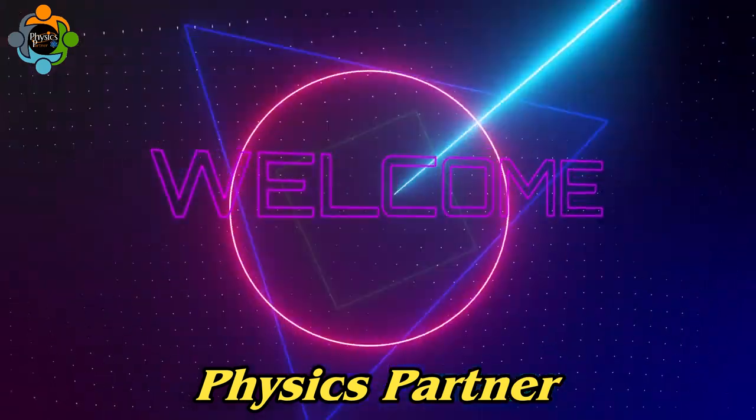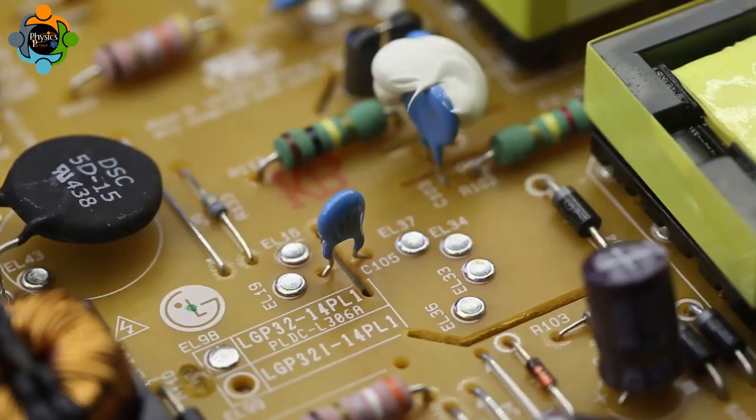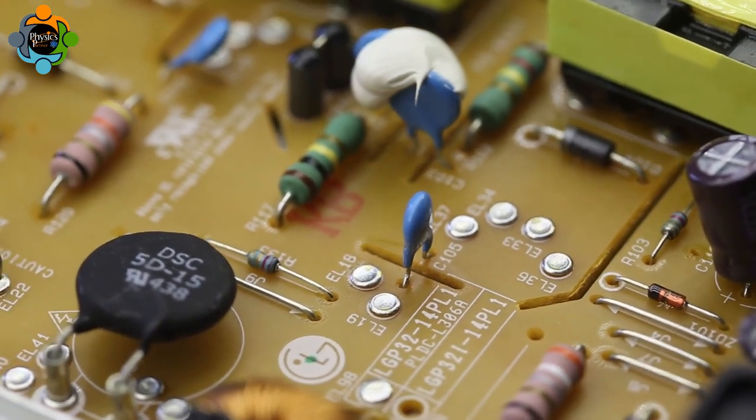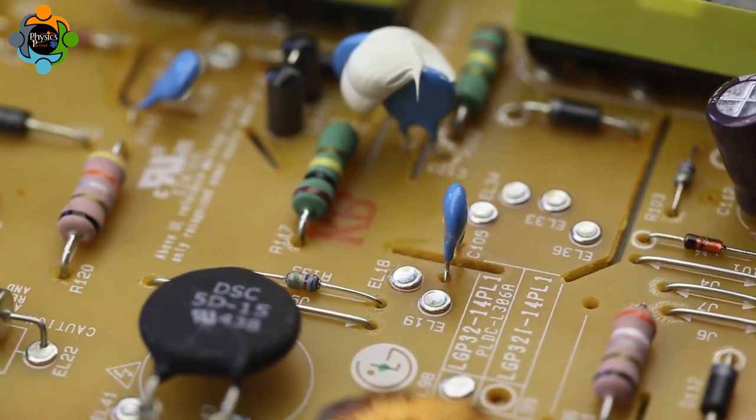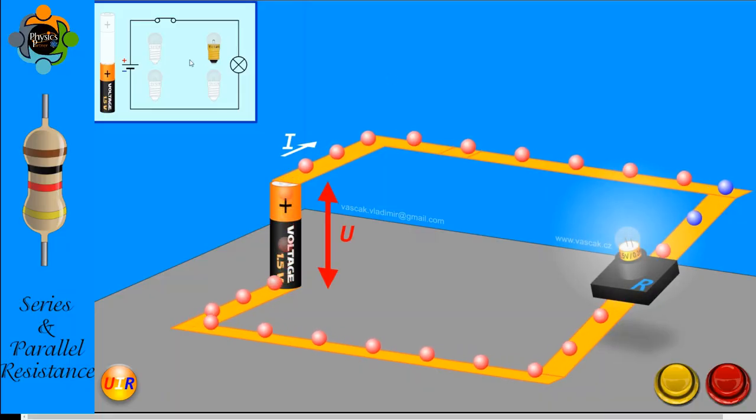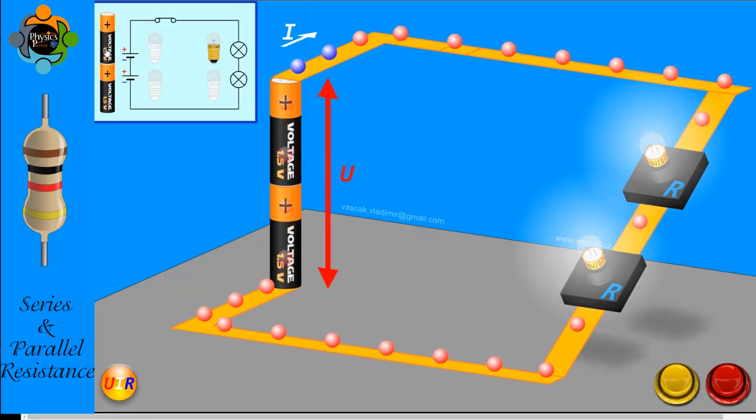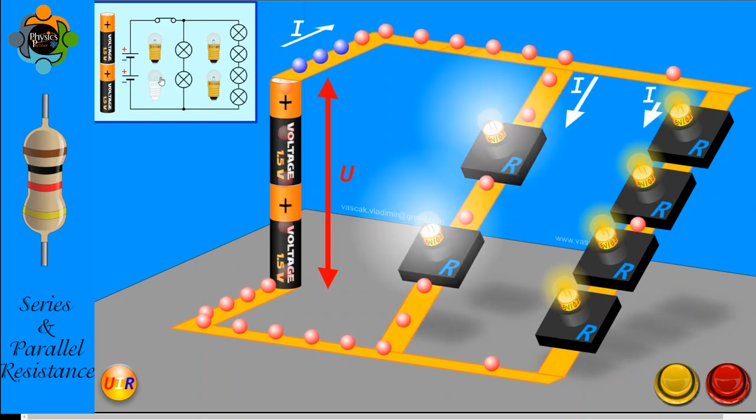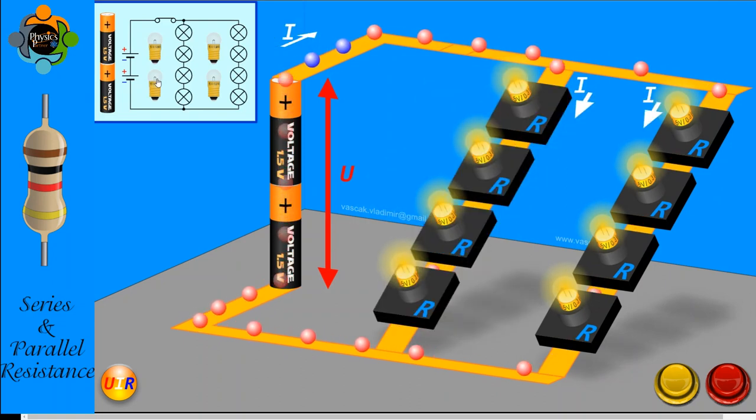Hello and welcome back to another episode of Physics Partner. Today we are diving into the fascinating world of electrical circuits to explore the concept of resistance in series and parallel connections. Have you ever wondered why overall resistance is high when in series but less in parallel? In series, resistors work together to increase resistance, while in parallel they offer alternative pathways to decrease resistance.